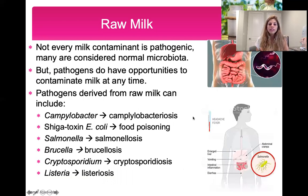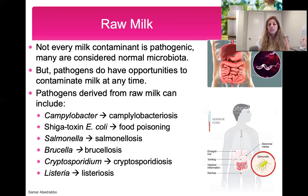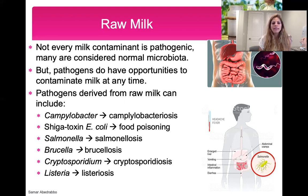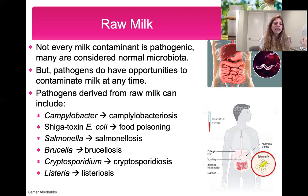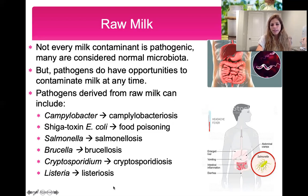Keep in mind that bacteria growing in raw milk — contaminants — are not all pathogenic; a lot of them can just be normal microbiota. But if pathogens do get into raw milk and grow, they can make someone very sick. Examples of pathogens typically seen in contaminated raw milk are Campylobacter bacteria, E. coli — specifically Shiga toxin-producing E. coli, which produces a toxin that causes food poisoning — Salmonella, Brucella, and Listeria. All of these bacterial species can make someone very sick and cause serious infections.